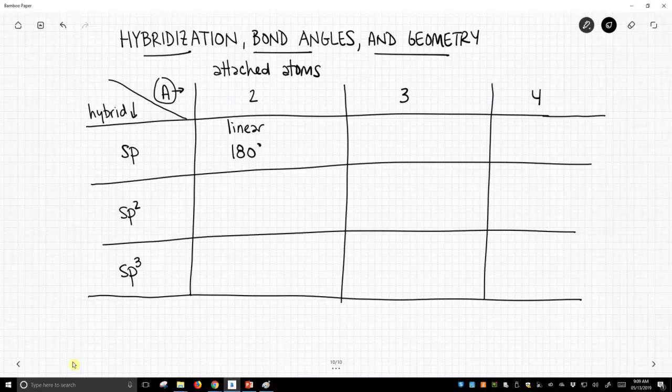Now as we go across the table we can't have three attached atoms and be sp hybridized. That doesn't work in our formula. We need at least as many hybrids as we have attached atoms. So this is not applicable and the same is true for four attached atoms.